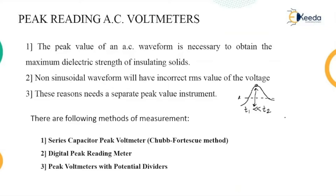In case of sinusoidal voltage, whatever the high frequency or high voltage which is attained — that is the peak value attained by the sinusoidal waveform — is going to be measured with the help of this method called as a peak reading AC voltmeter. Peak reading itself indicates whatever the peak value attained by the waveform, whether on positive half cycle or negative half cycle, is noted with the help of a voltmeter.